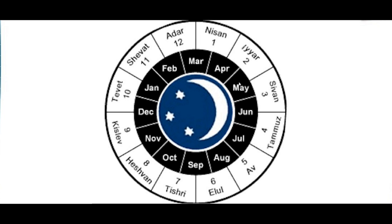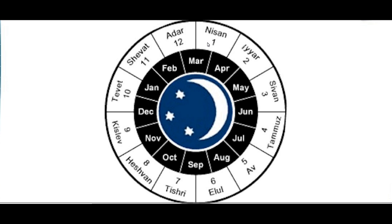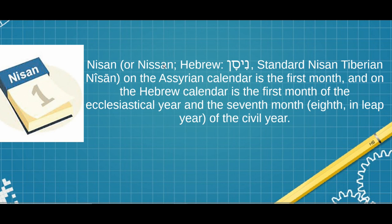We're going to talk about the religious, biblical, or ecclesiastical side. The first day of the first month on the religious side is Nisan, and it takes place between March and April. In Hebrew standard, Nisan — also known on the Assyrian calendar — is the first month. On the Hebrew calendar, which is what we're focusing on, it is the first month of the ecclesiastical year and the seventh month of the civil year. We won't worry about leap years — last year was a leap year, this year is not. In a leap year the Hebrew calendar has 13 months instead of 12.